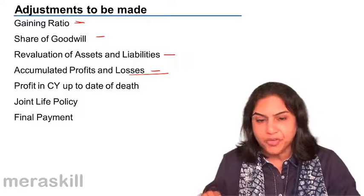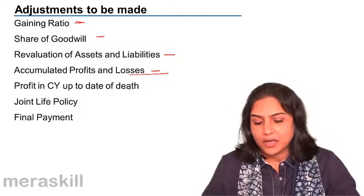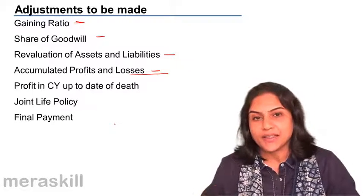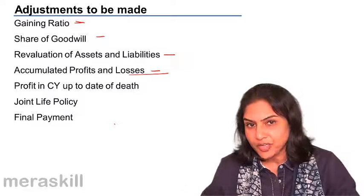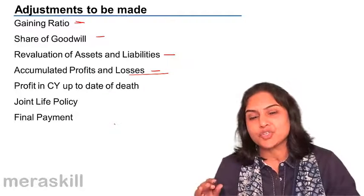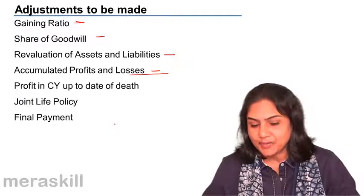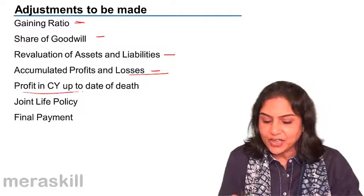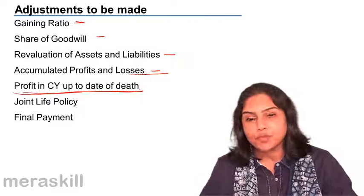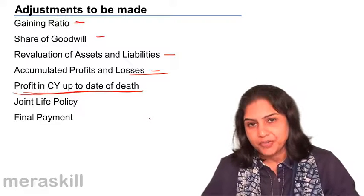An area of difference, however, is that retirement is often at the end of a particular year — a partner can time his retirement to coincide with 31st March when the accounts are being closed, so retirement is usually at the end of a financial year. But death is sudden; it can happen anytime during the year. So there is an additional thing we need to do: find out the profit in the current year up to the date of death.